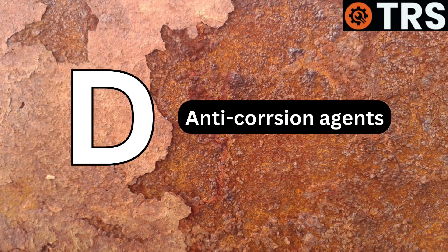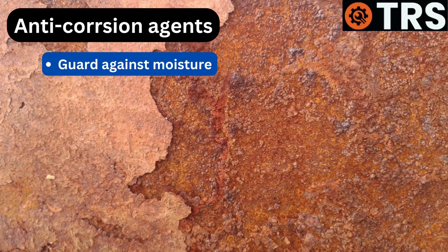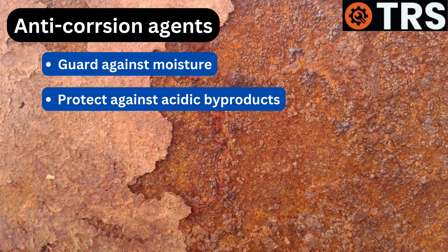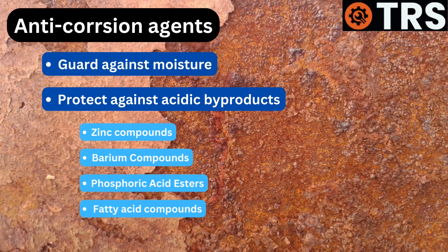D: Anti-corrosion agents. These additives guard against the corrosive effects of moisture and acidic combustion byproducts on engine parts. These include zinc compounds, barium compounds, phosphoric acid esters, fatty acid compounds, and neutralizing agents.